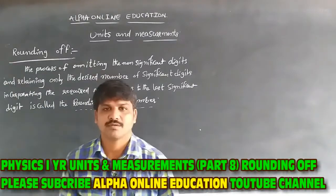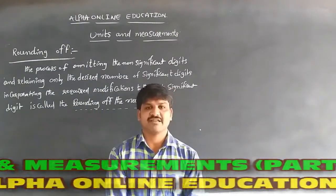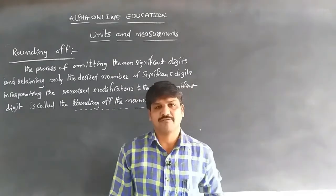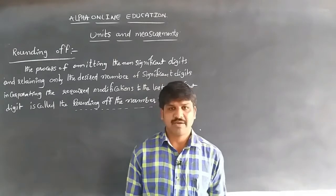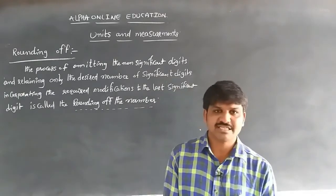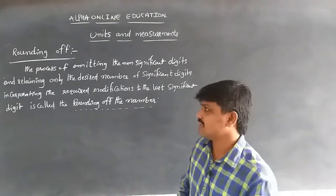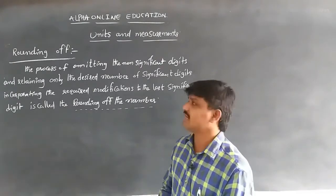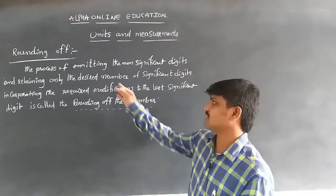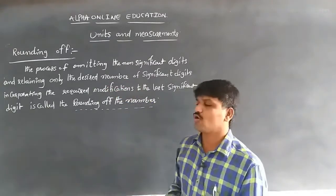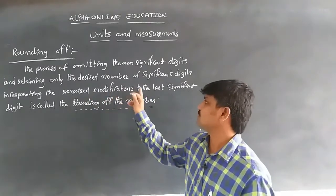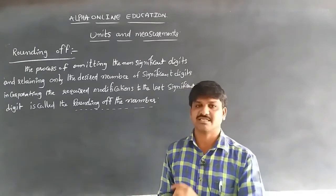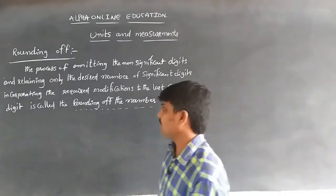Rounding off is the process of eliminating or omitting the non-significant digits from the given data, retaining only the desired number of significant digits, and incorporating the required modifications to the last digit.